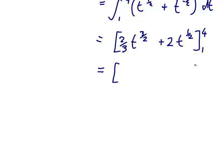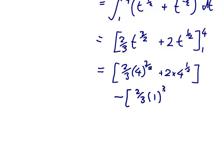And when we put in the 4 and the 1, so 2 thirds of 4 to the 3 over 2 plus 2 times 4 to the half, minus 2 thirds of 1 to the 3 over 2 plus 2 times 1 to the half.